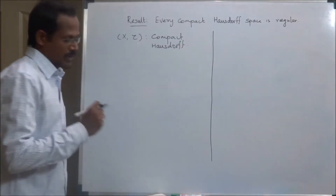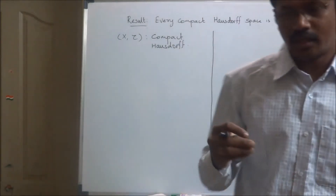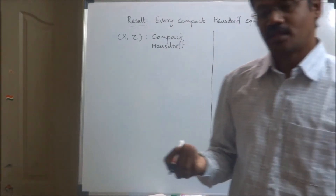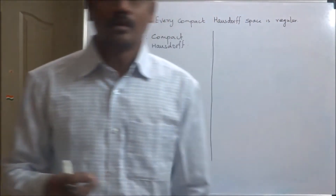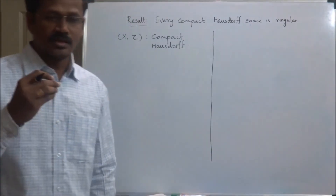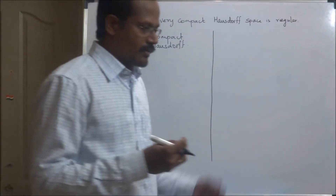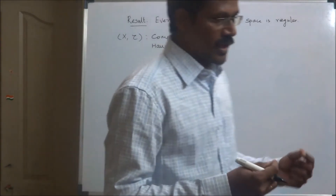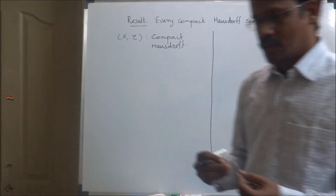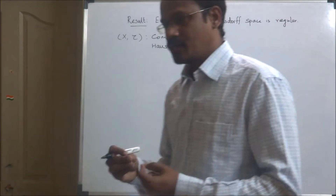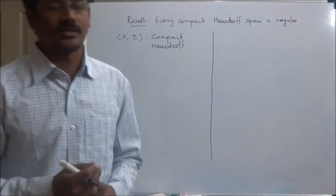We need to prove that it is regular. So recall the definition of a regular space. A topological space X is said to be a regular space if it is a T1 space and given a point x and a closed set B not containing x, these two can be separated by means of disjoint open sets in X.